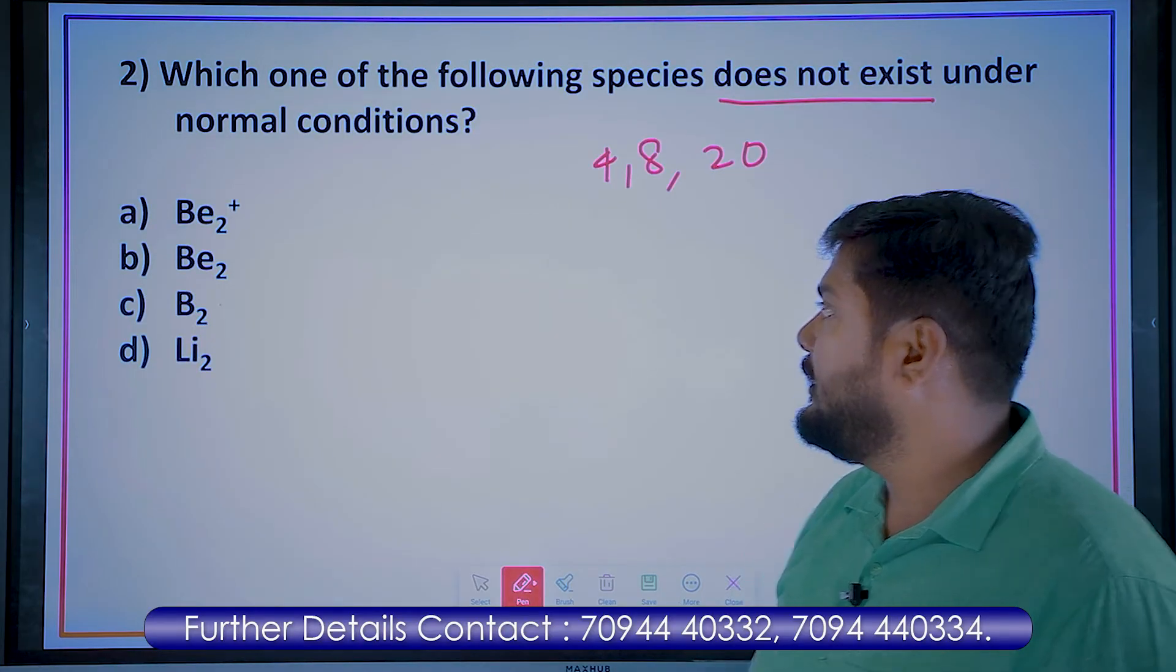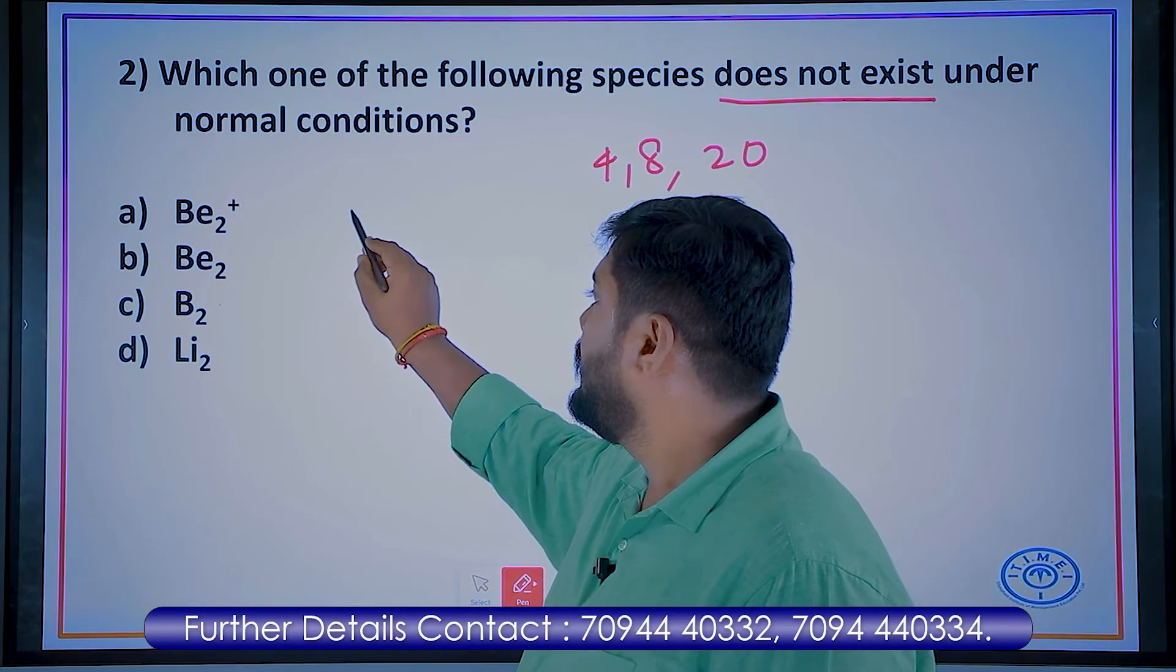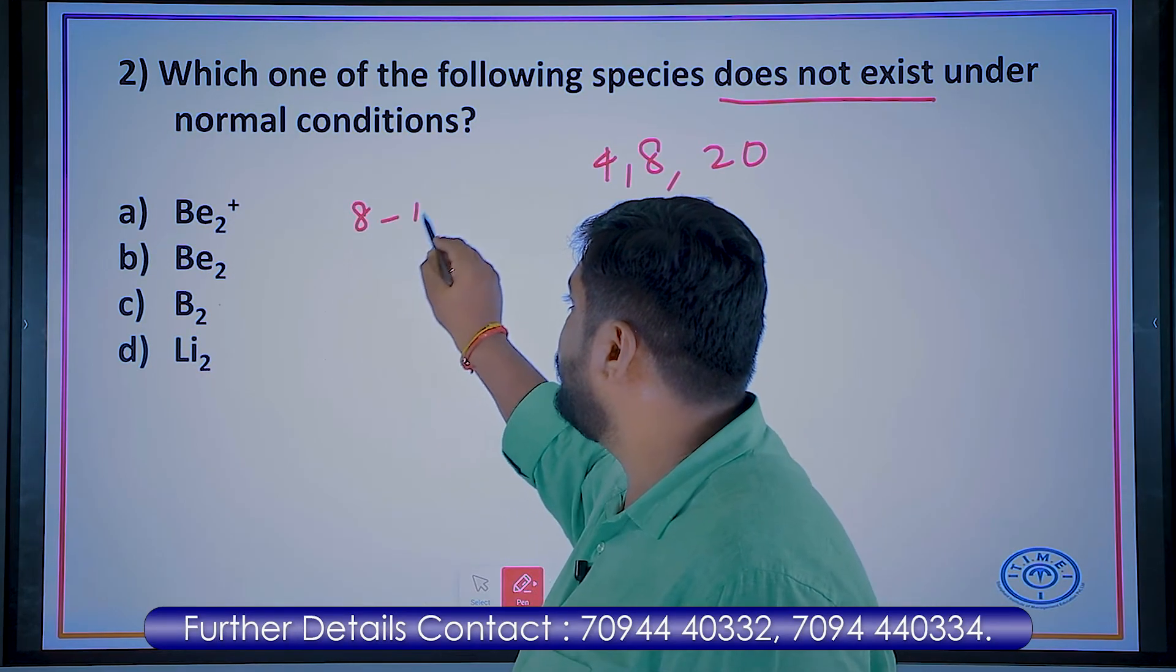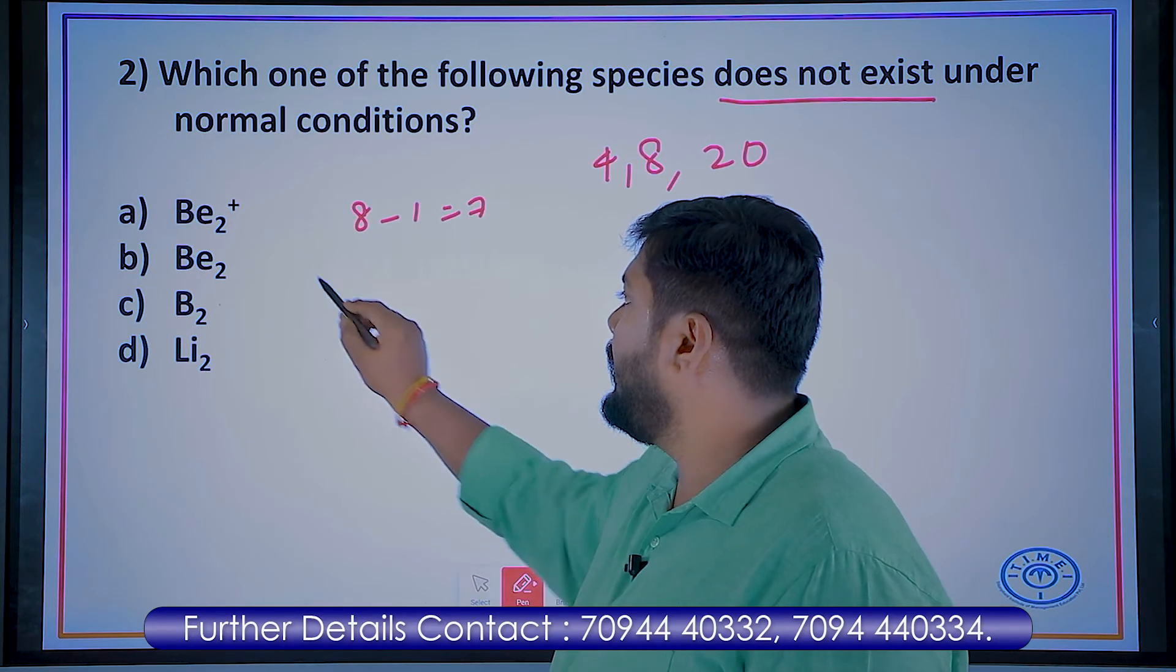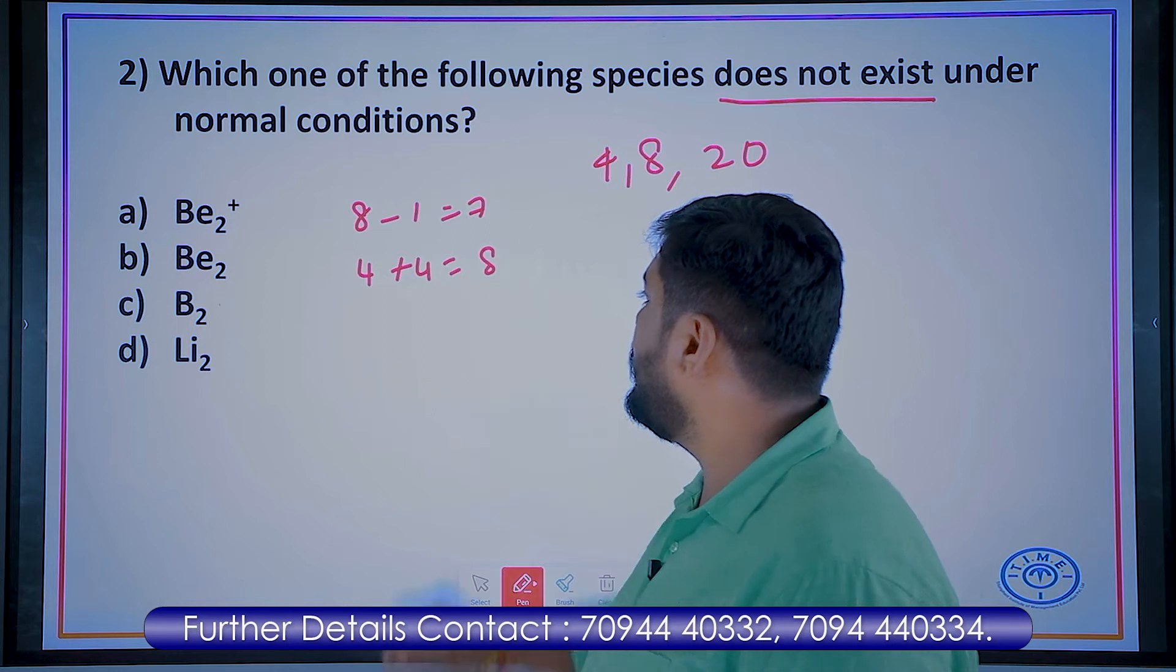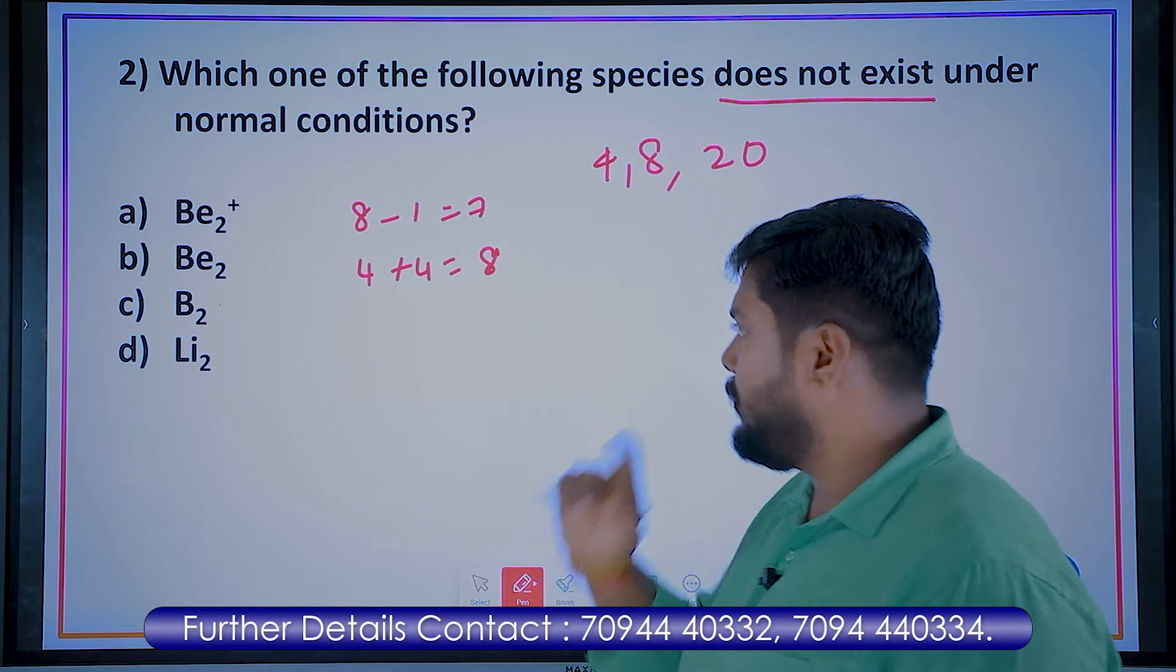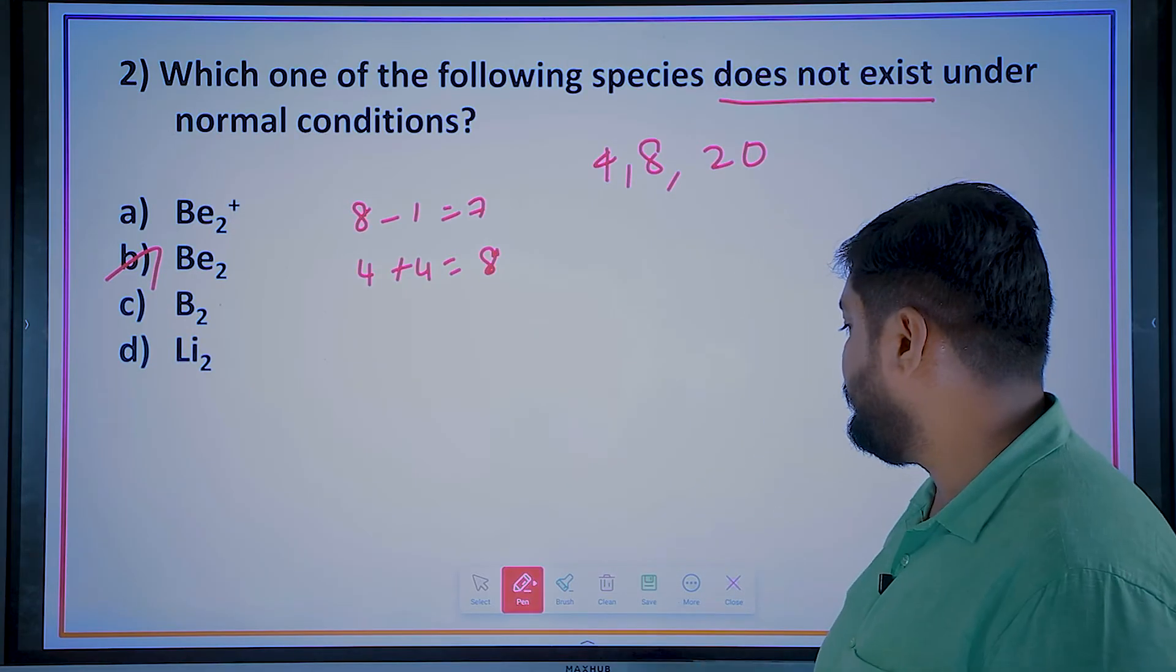So they don't exist. So Be2, beryllium will have atomic number 4. And beryllium has 4, another beryllium has 4. In total, Be2 will have 8 electrons. So it does not exist.